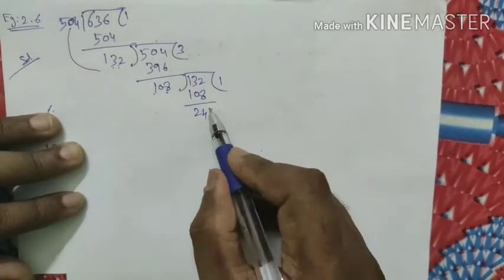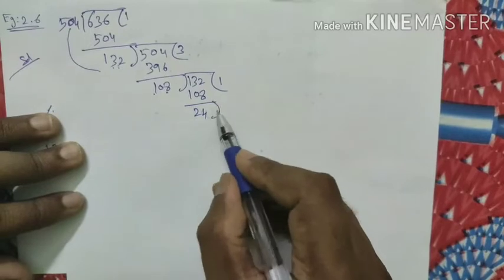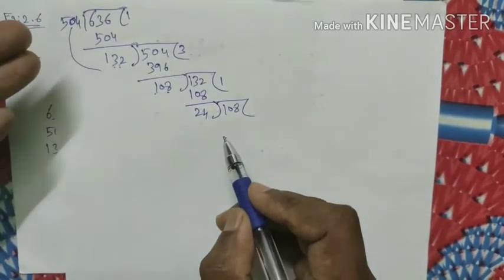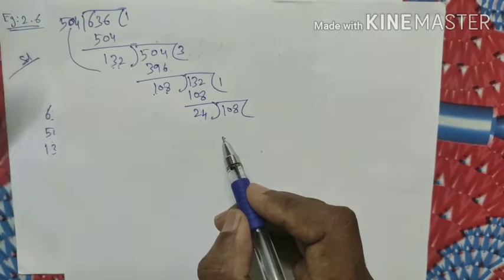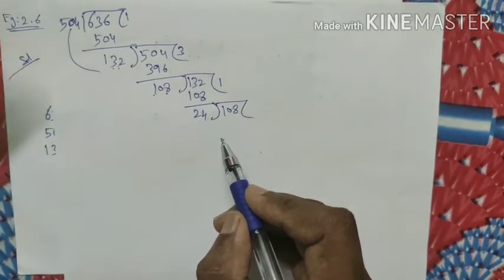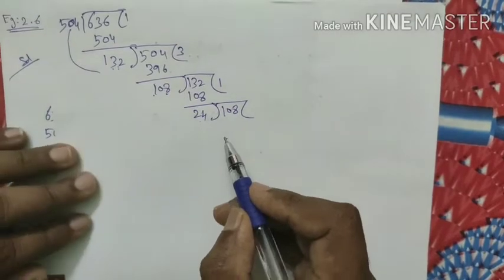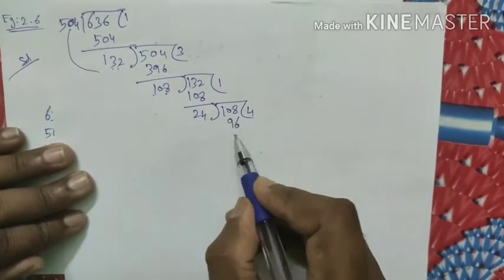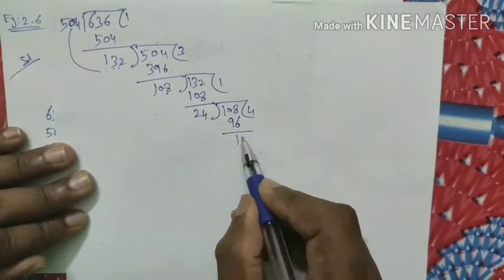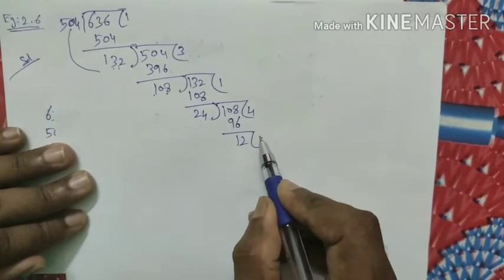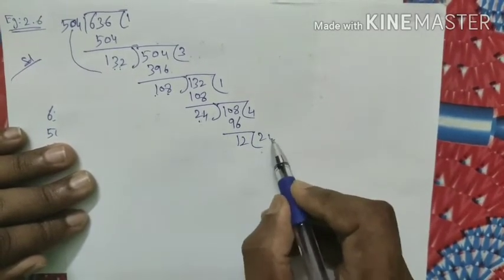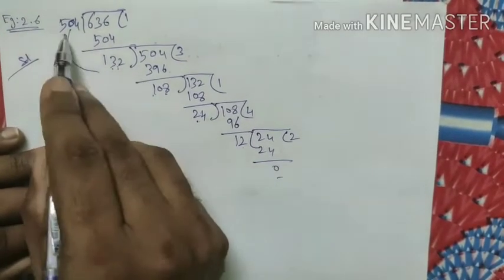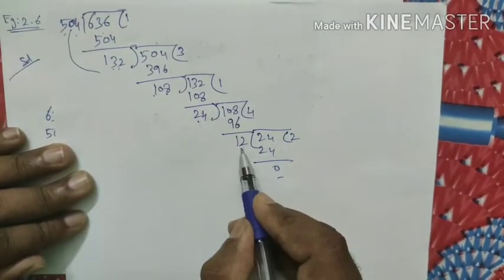132 is divided by 108: only one time possible. 108 into 1 is 108, and the remainder is 24. Still not zero. Now 108 is divided by 24: that goes 4 times, giving 96, and the remainder is 12. Still not zero. Next, 24 divided by 12: 2 times, giving 24. The remainder is 0, so the common divisor is 12.